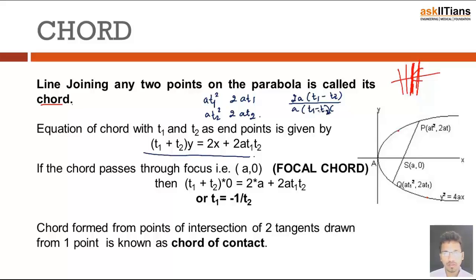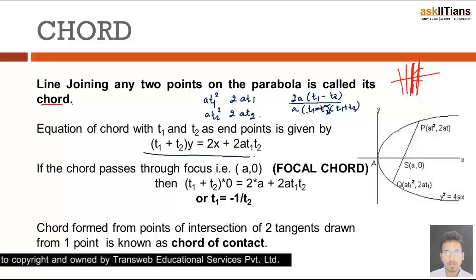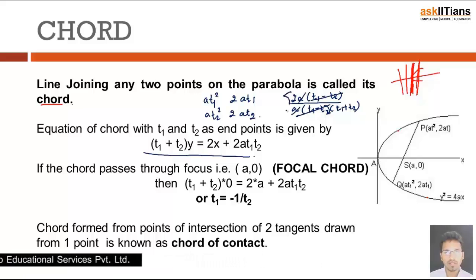In that case, that was normal, so it was more easier, additional property. But this is basically the slope of a chord. Any chord, if you're finding slope, will be given by t₁ + t₂.